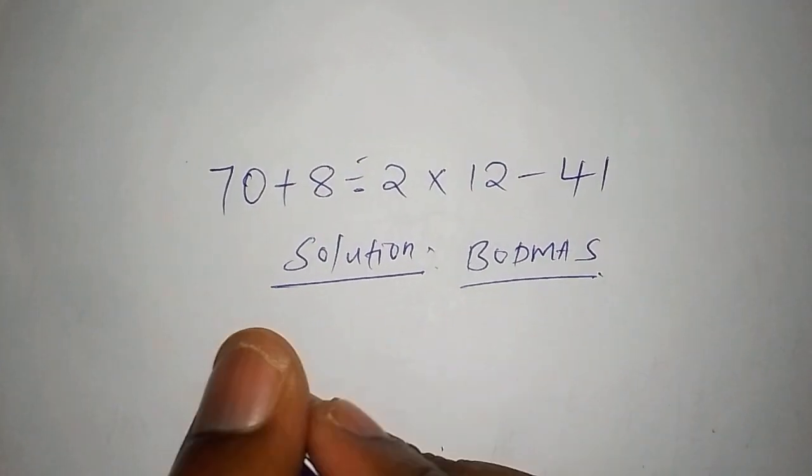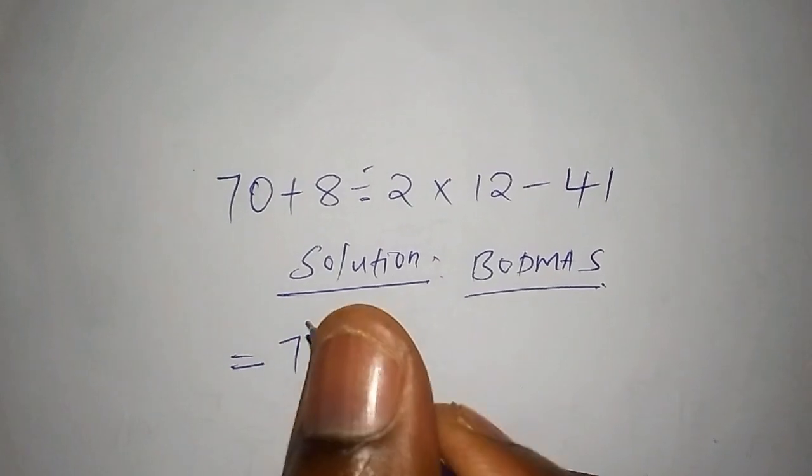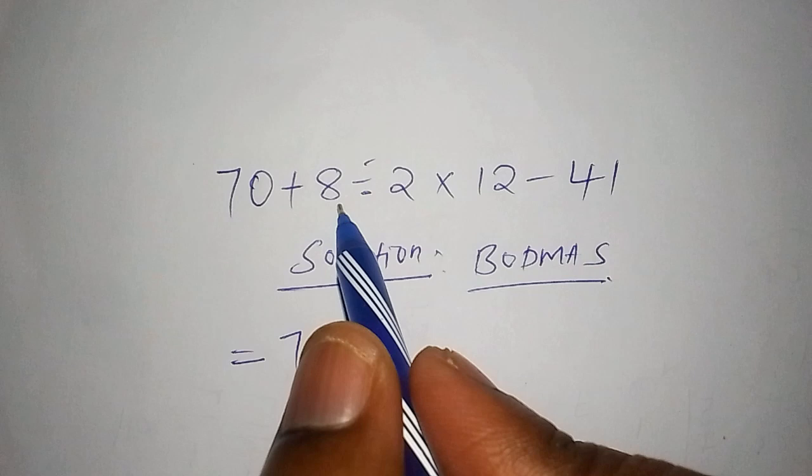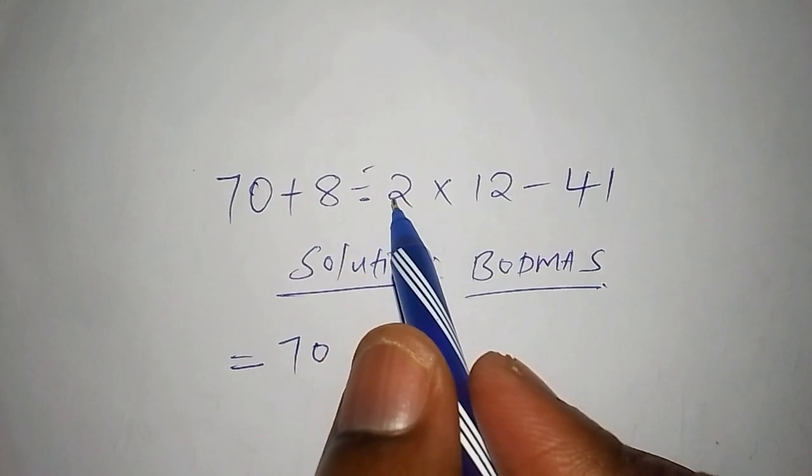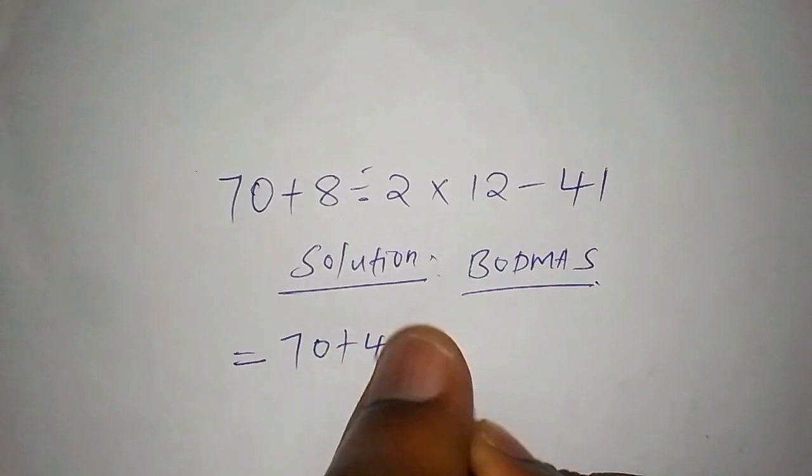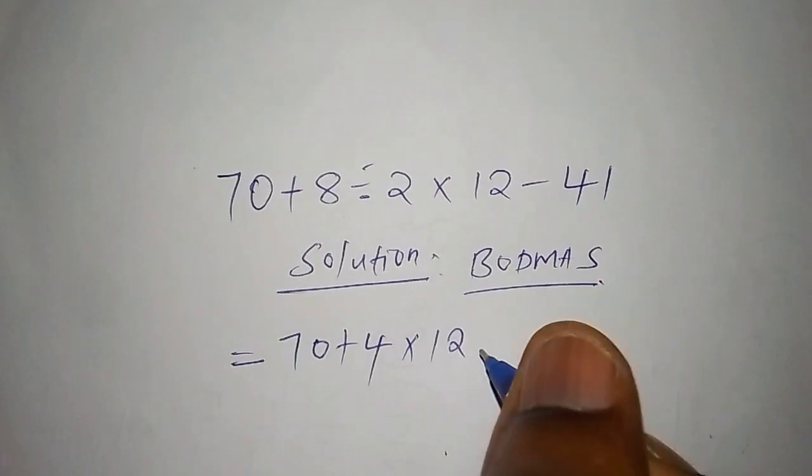Solution: We shall have now this equals to 70 here because now we are going to division sign. So we shall work out 8 divided by 2, and 8 divided by 2 is 4. So 70 add to 4, then multiply by 12, then subtract from 41.